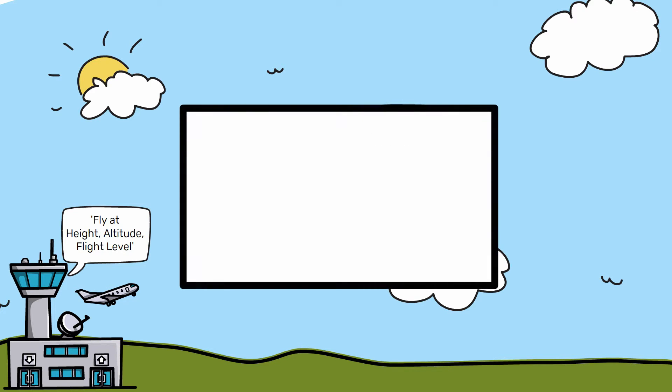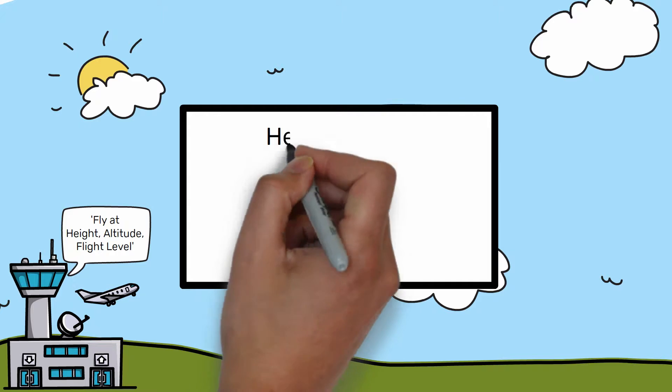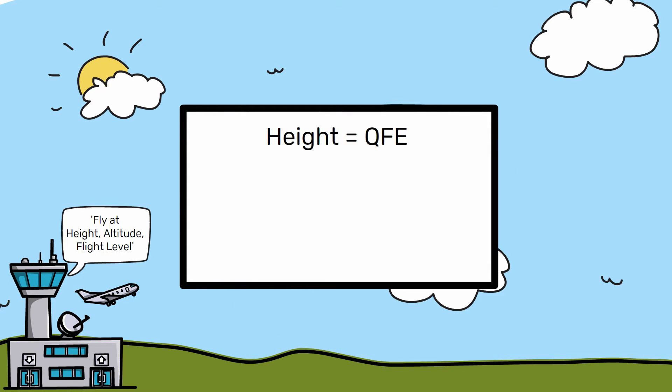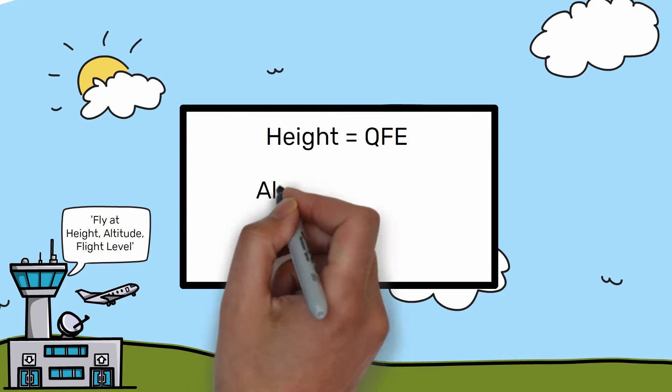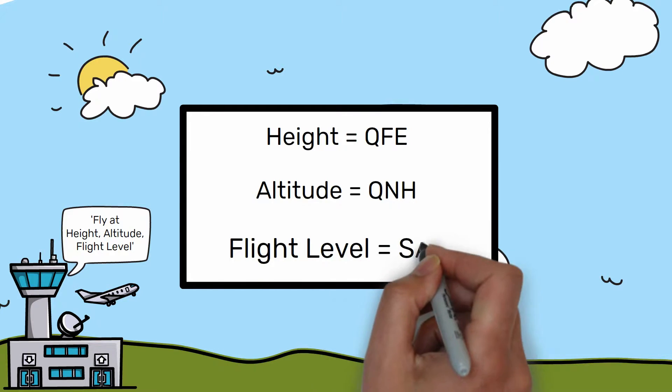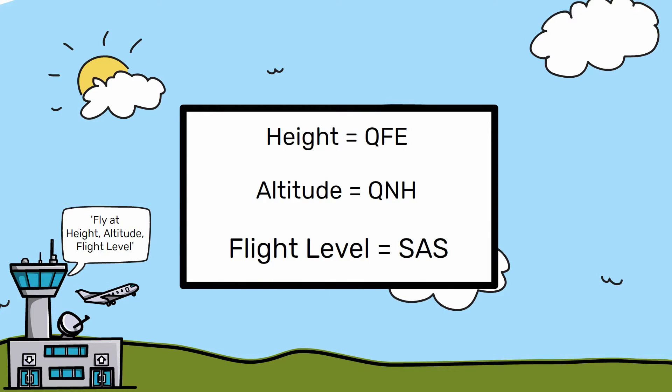In short, an air traffic controller will say height when you're on the QFE, altitude when on QNH, and flight level when on SAS. We'll go into this in more detail in a second, but if you want to learn more about QFE, QNH and SAS in the meantime, check out the link I've added in the description below.